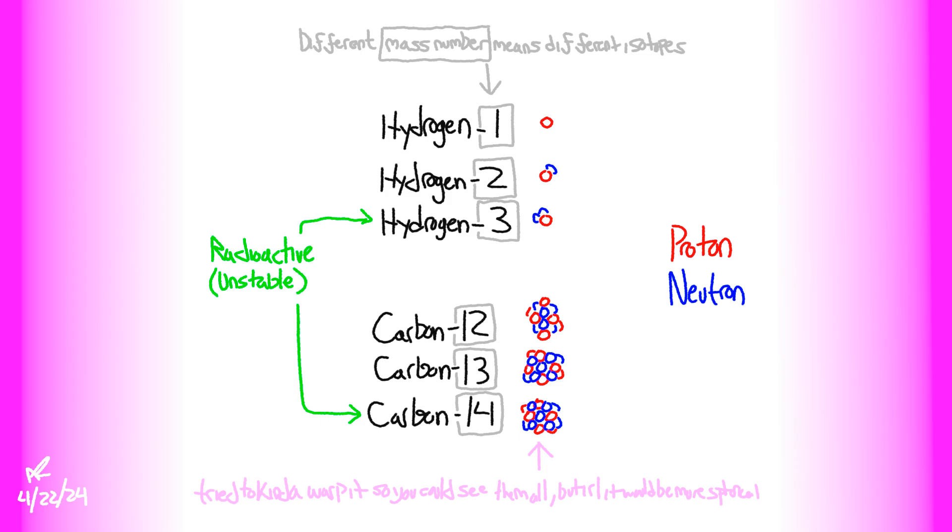A hydrogen with one neutron has a mass number of 2, and a hydrogen with two neutrons has a mass number of 3. Different atoms with the same number of protons but a different amount of neutrons are called isotopes. So any atom with just one proton is hydrogen, but varying neutron numbers means you've got different isotopes. These isotopes of hydrogen with neutrons in them are super super rare, which is why hydrogen's official mass number is closer to 1 than 2 or 3.